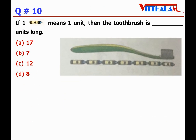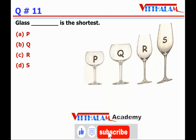Question 10: if one crayon means one unit, then the toothbrush is blank units long. Number of crayons: 1, 2, 3, 4, 5, 6, and 7. That means our answer is B — the toothbrush is 7 units long.